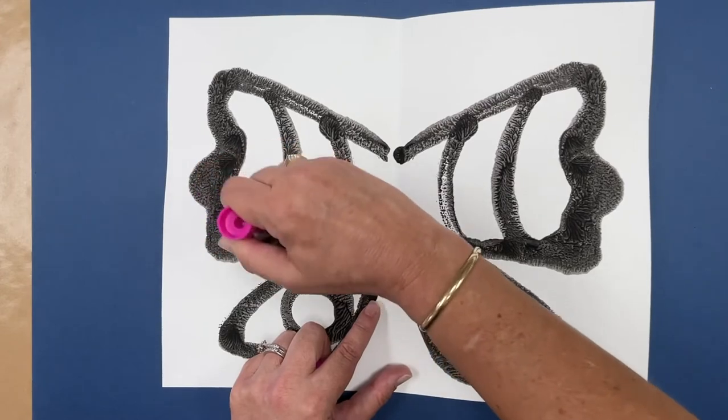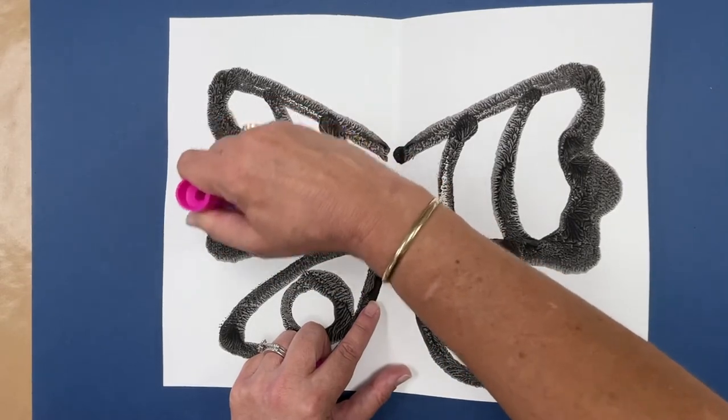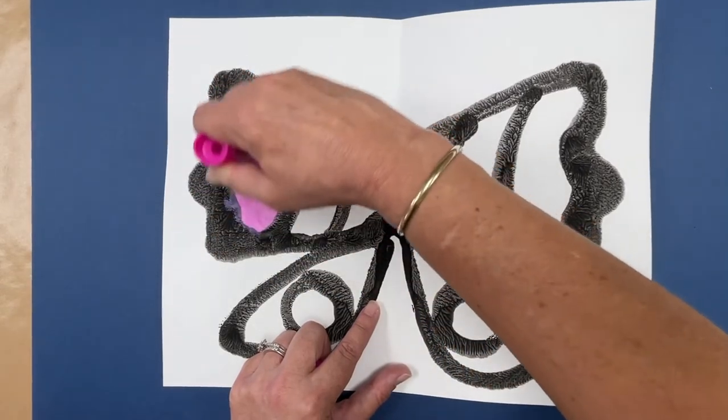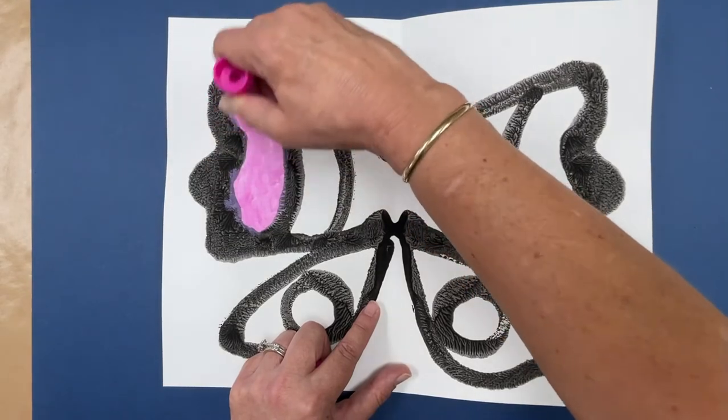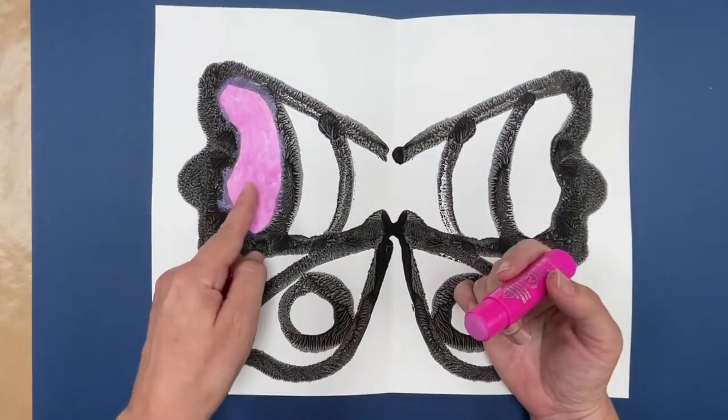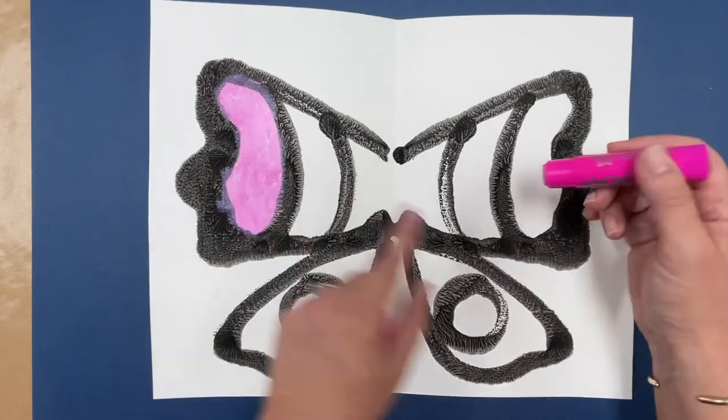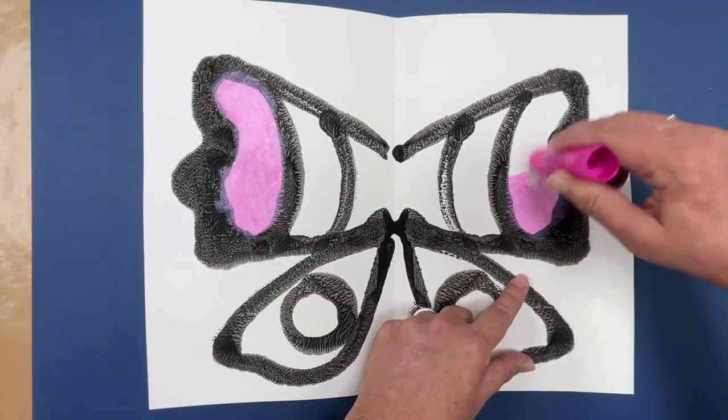And I'm just going to color in this top shape on my butterfly. So remember it's symmetrical so that one is pink and now I need to come over on the other side and make this one pink.